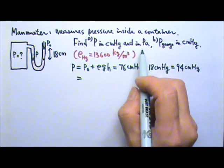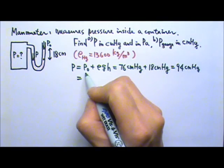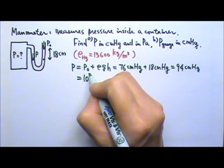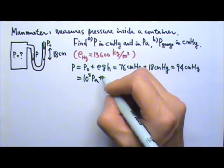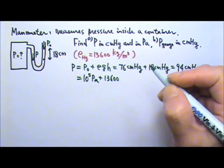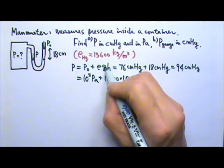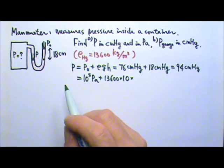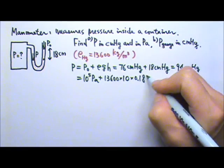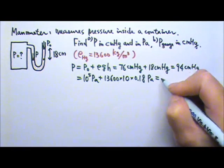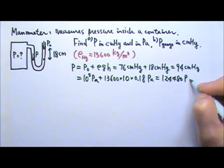That's the absolute pressure inside the container in centimeter mercury. If I want it in Pascals, everything has to be in standard units. The standard atmospheric pressure is 10 to the fifth Pascals, plus the density of mercury in standard units — 13,600 — times G (using 10) times the height, which is 18 centimeters or 0.18 meters in standard units. This gives 124,480 Pascals.